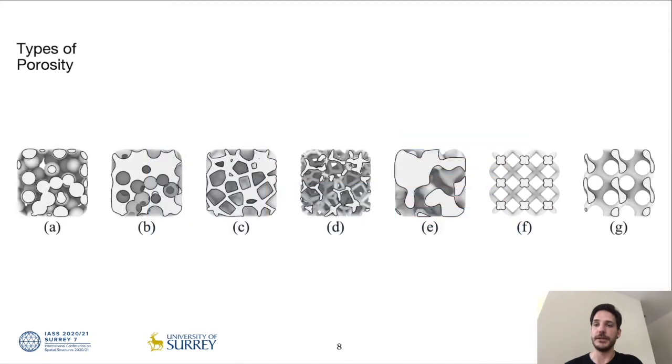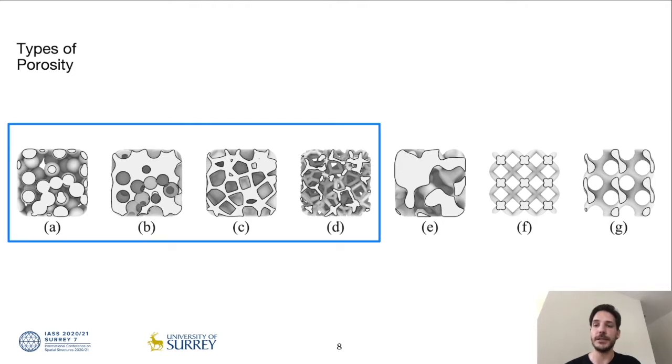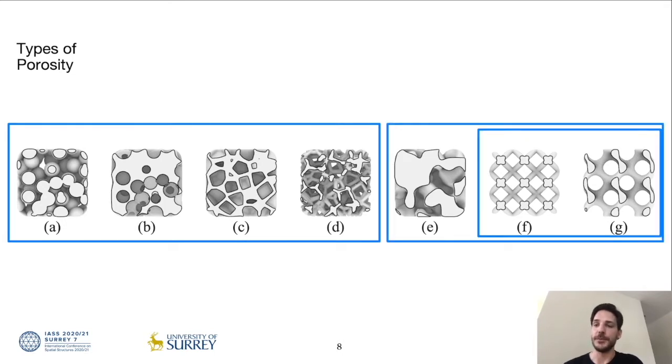Porosities can be organized in different categories, for example by the way of their creation. On the left we have the more stochastic patterns as they are found in nature, in foams, stones, or bone tissue. On the right, the ones generated by mathematical formula, some resulting from the repetition of a unit cell like truss-based lattices or triply-periodic minimal surfaces. This study focuses on the latter, but most of the presented methods are applicable to all of these geometries.